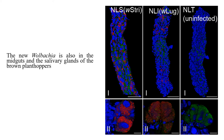The presence in the salivary glands is particularly important because we know that viruses are transferred through saliva from one plant to the next, and that's really important.